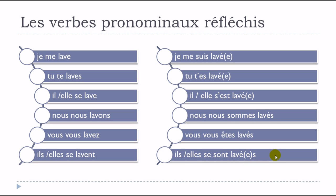Regarding pronunciation: whether you have the masculine singular 'lavé', feminine 'lavée', masculine plural 'lavés', or feminine plural 'lavées', phonetically you always get just one form: 'lavé'. So for speaking French it's easy — one form. For writing correctly, remember to add the 'e' for feminine and 's' for plural.